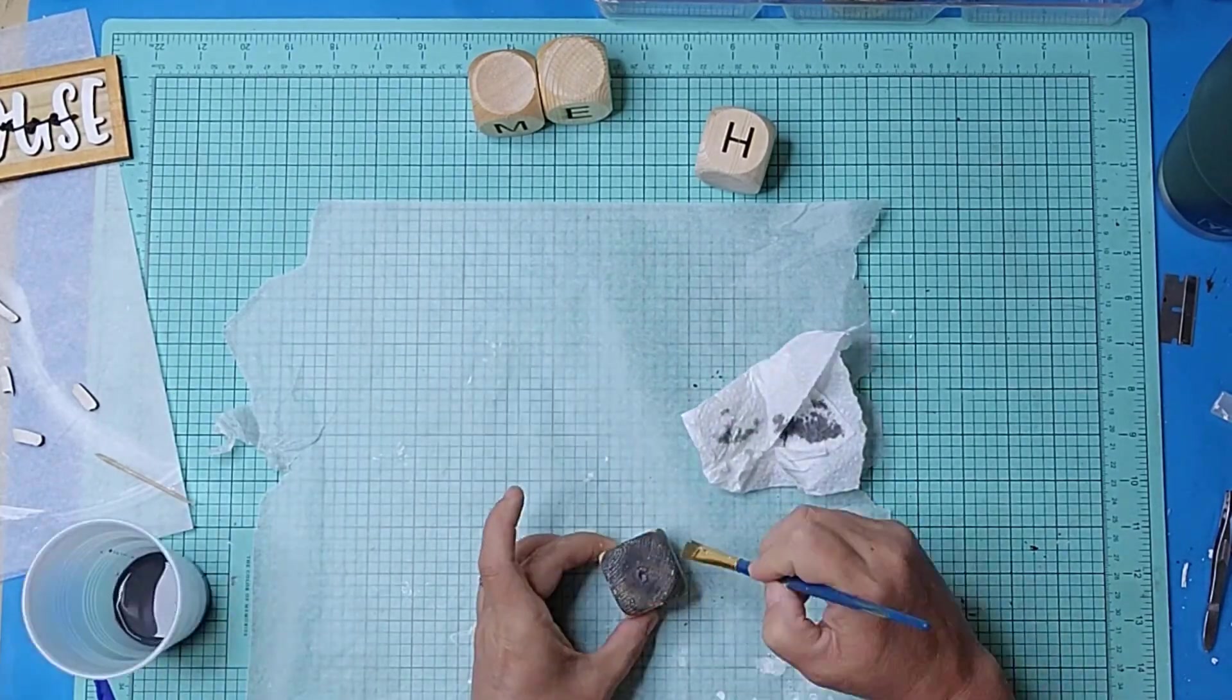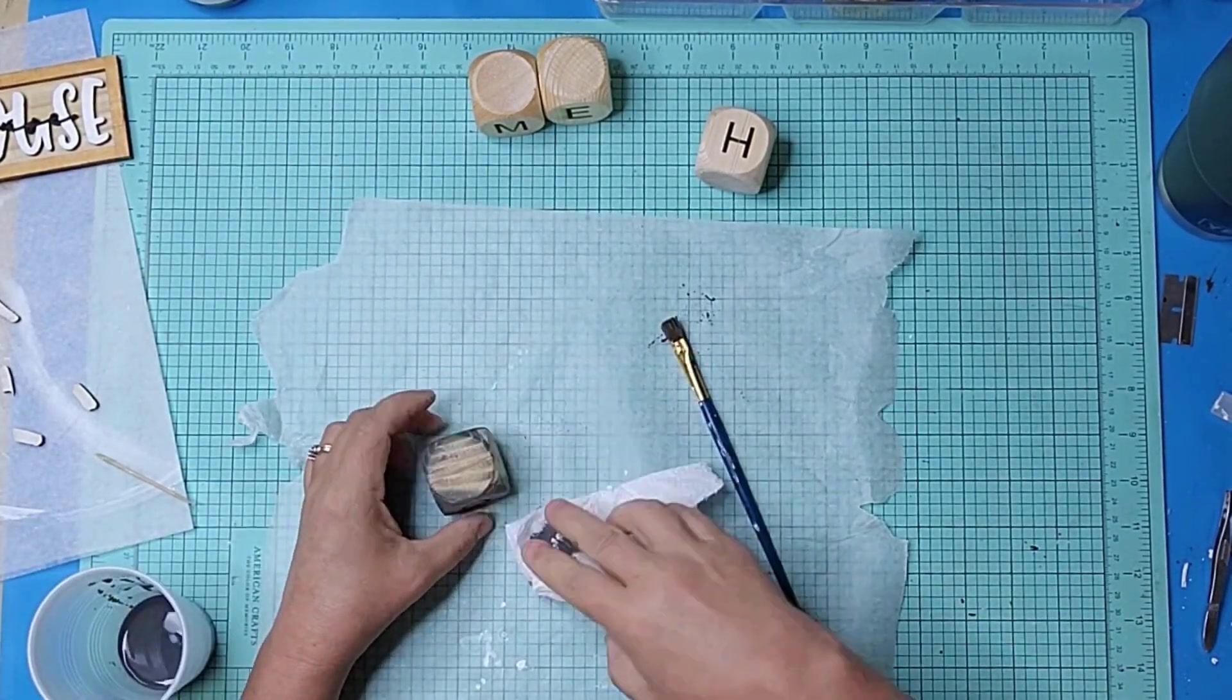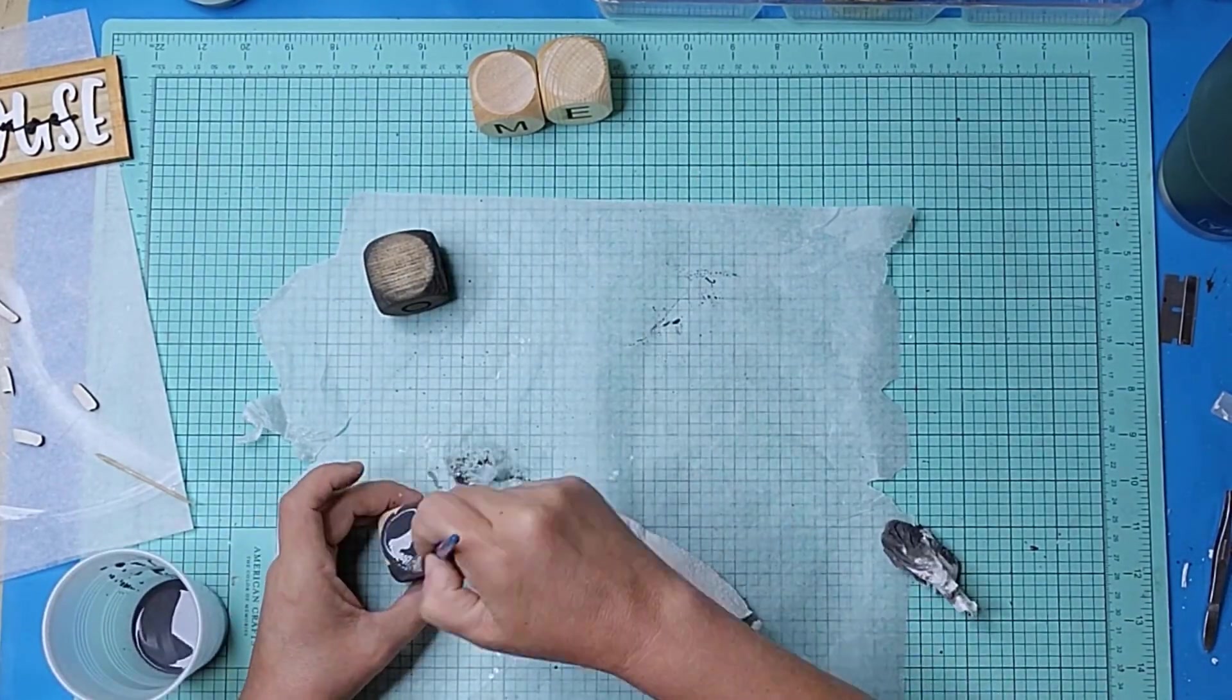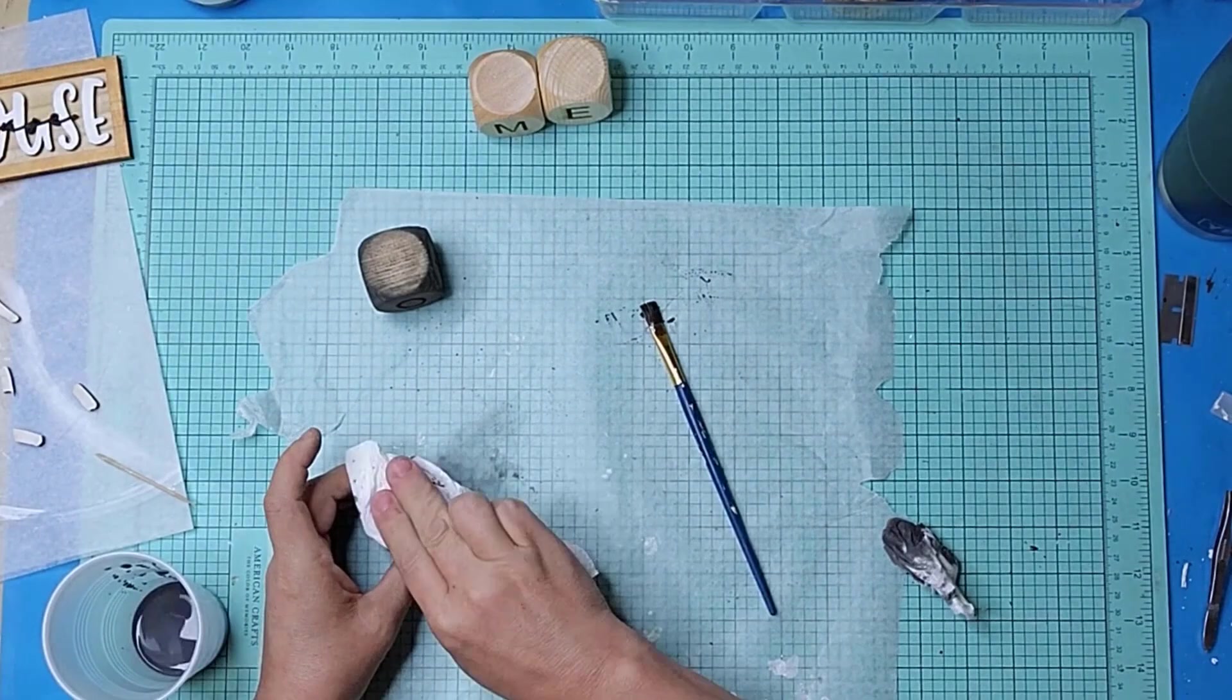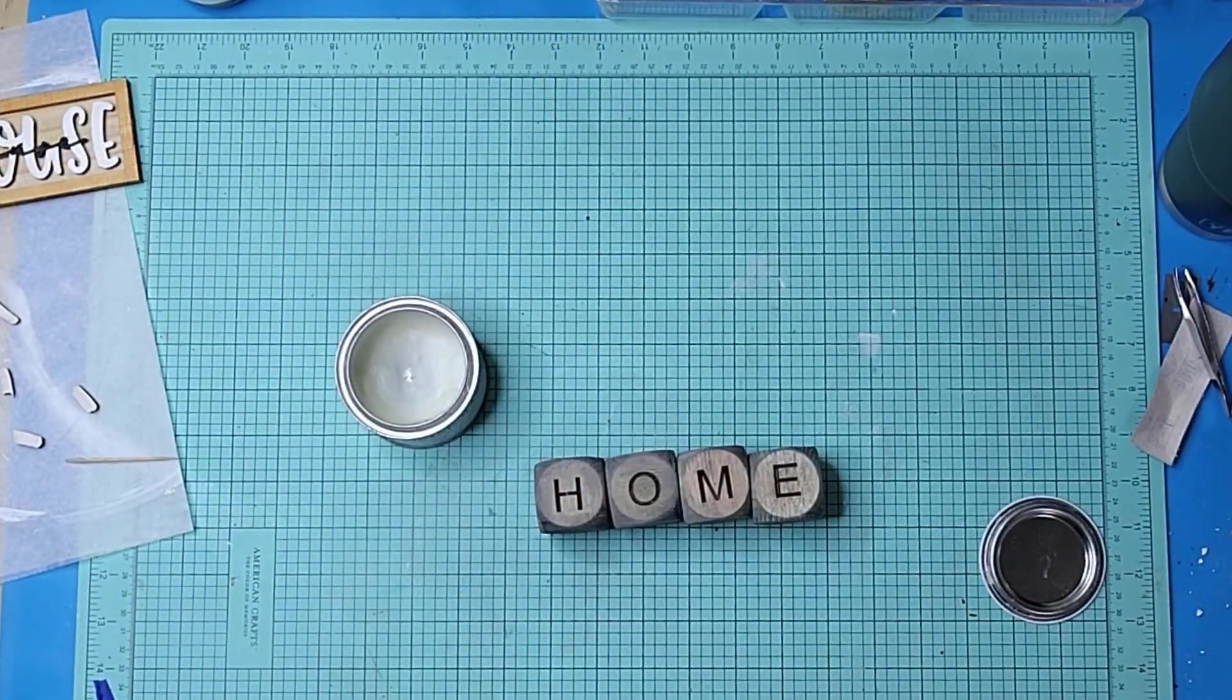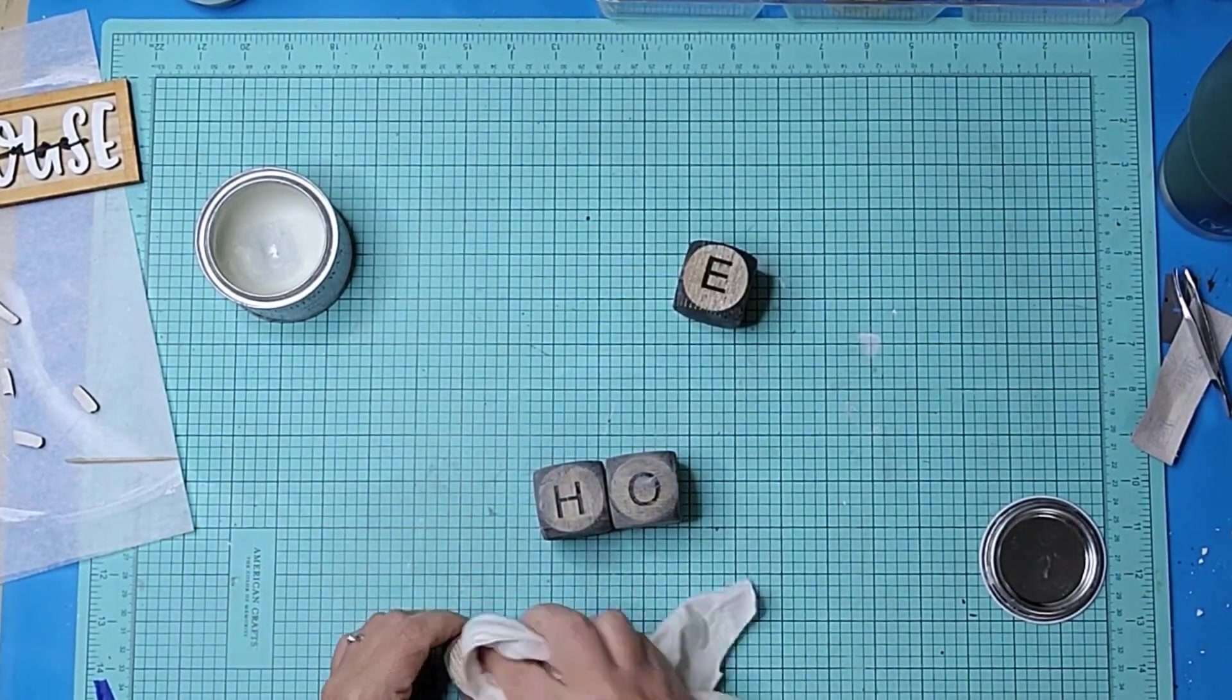I used some Unicorn Spit Stain and Water to stain each of the blocks. And then used Jolie Finishing Wax to seal and protect the blocks.